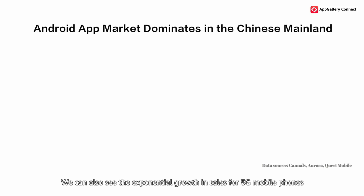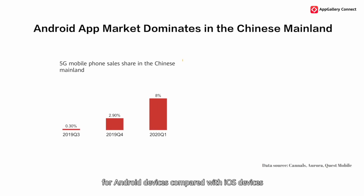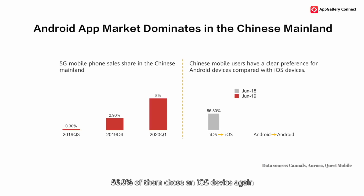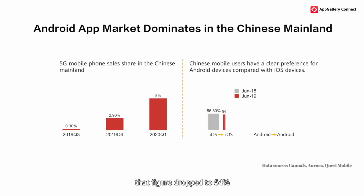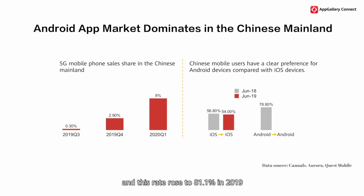We can also see the exponential growth in sales for 5G mobile phones, with Chinese mobile users showing a clear preference for Android devices compared with iOS devices. In June 2018, when iOS users wanted to change their mobile phone, 56.8% of them chose an iOS device again. But in 2019, that figure dropped to 54%. When we compare this to Android users, 78.8% of them chose an Android device again, and this rate rose to 81.1% in 2019.